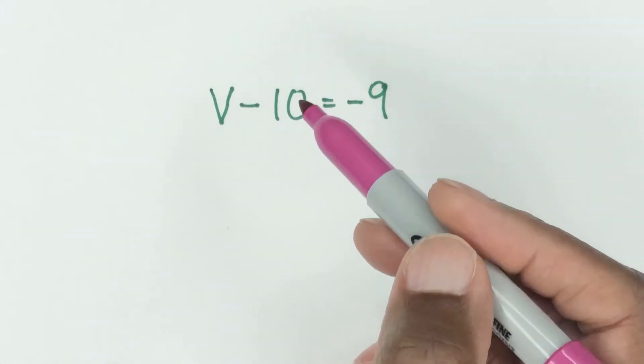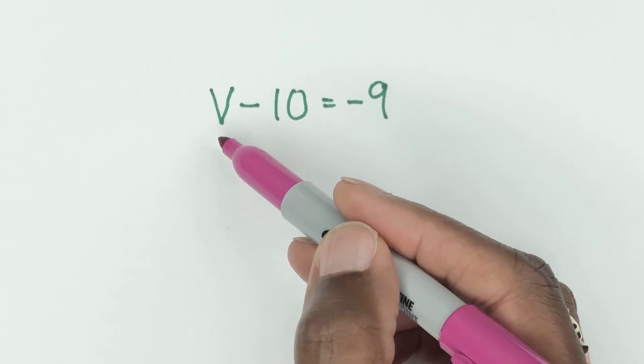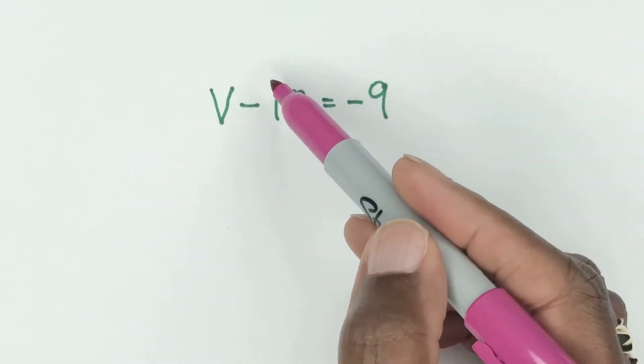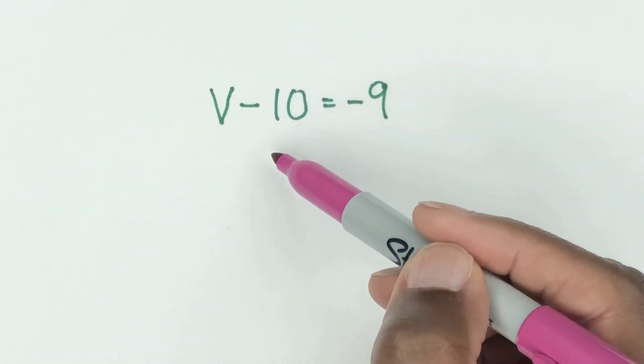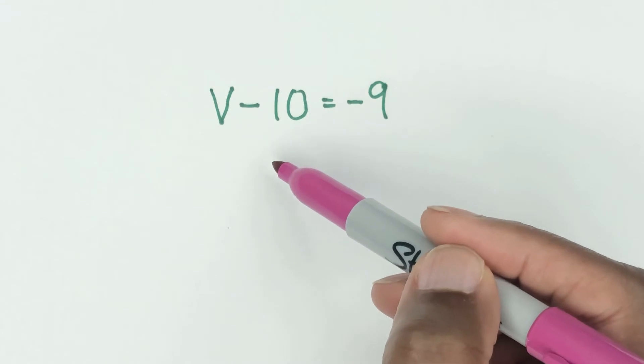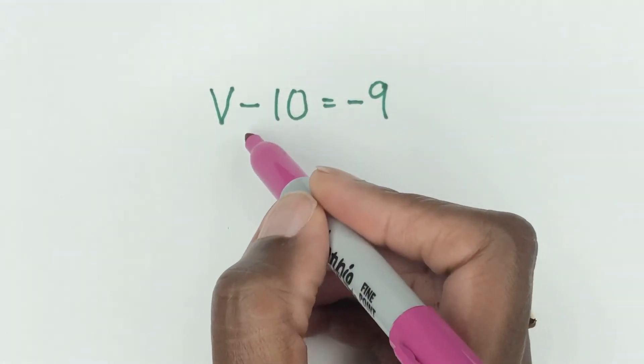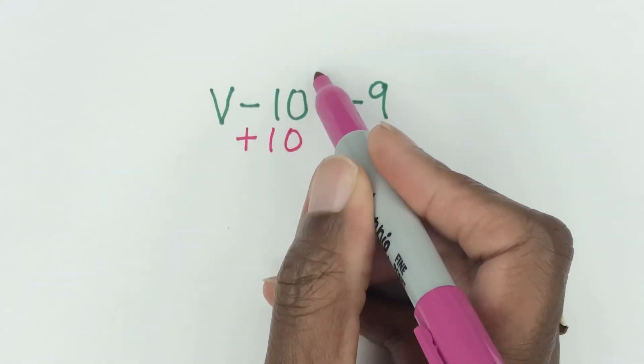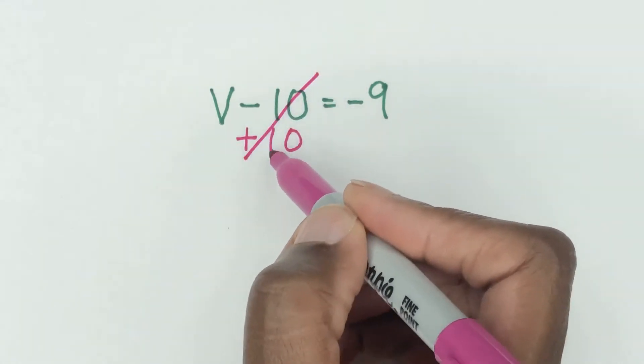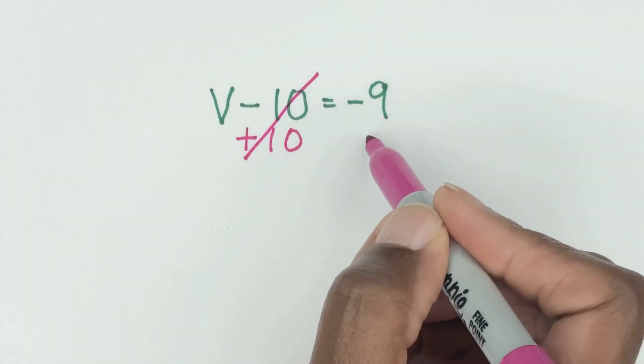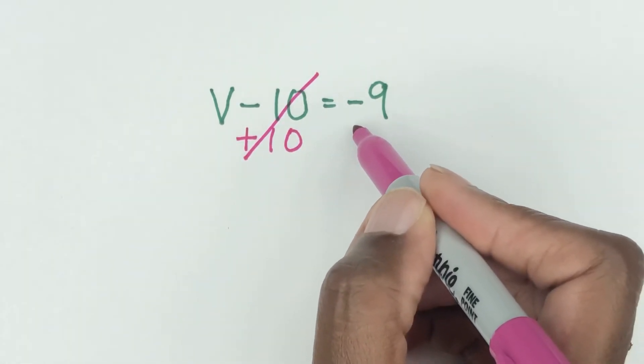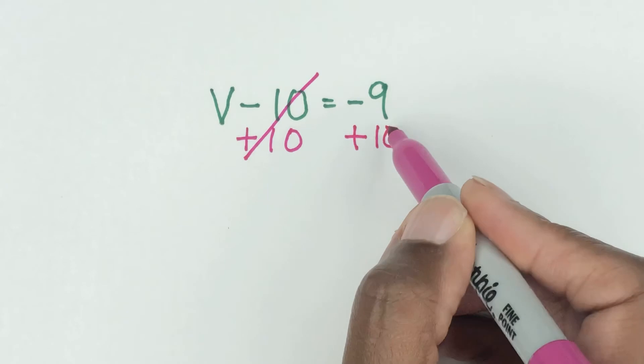The objective is to get the variable V on its own and to do that you have to get rid of this minus 10 that's with it by doing the opposite operation. So right now it's minus 10, so to get rid of it you do a plus 10 and that cancels it. And what you do on one side of the equal sign you must do also on the other side, so you also repeat a plus 10 on this side.